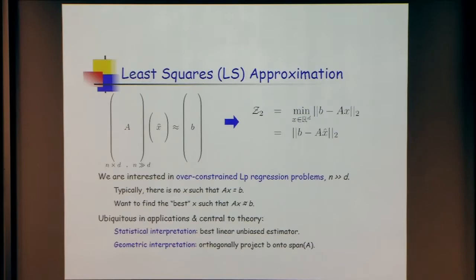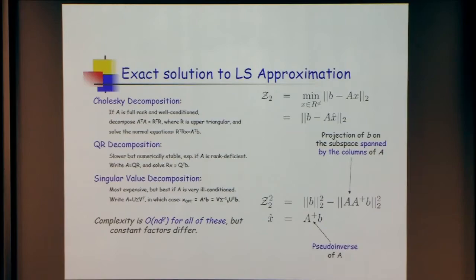Tall matrix: you want to minimize Ax minus b. If you're tall, in general there's not a solution because b has a piece sitting outside the column space of A. So you ask for the best such x, and a standard thing is to put a 2-norm. You're dealing with over-constrained L2 regression problems. This appears everywhere, with natural statistical and geometric interpretations. Algorithmically, it takes n times d-squared time using Cholesky, QR, or SVD.